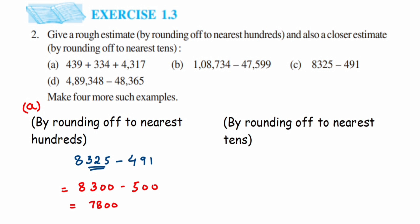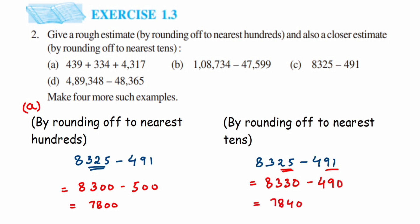Now rounding 8325 minus 491 to nearest tens: for 25, it lies between 20 and 30 — since 25 is exactly at the center, it rounds up to 30, so 8325 becomes 8330. For 91, it lies between 90 and 100 and is closer to 90, so 491 becomes 490. Subtracting: 8330 − 490 = 7840.